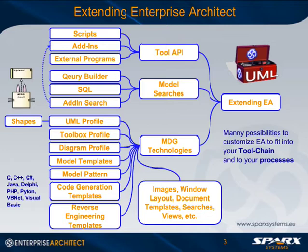MDG technology may consist of UML profiles. UML profiles are the UML way to extend UML as a modeling language, so you can define your own extensions within Enterprise Architect. You can also use shape scripts to define your own graphical representation of your model extensions. You can define a toolbox profile to extend or override existing toolboxes, write your own toolboxes, and include customized languages with UML profiles.